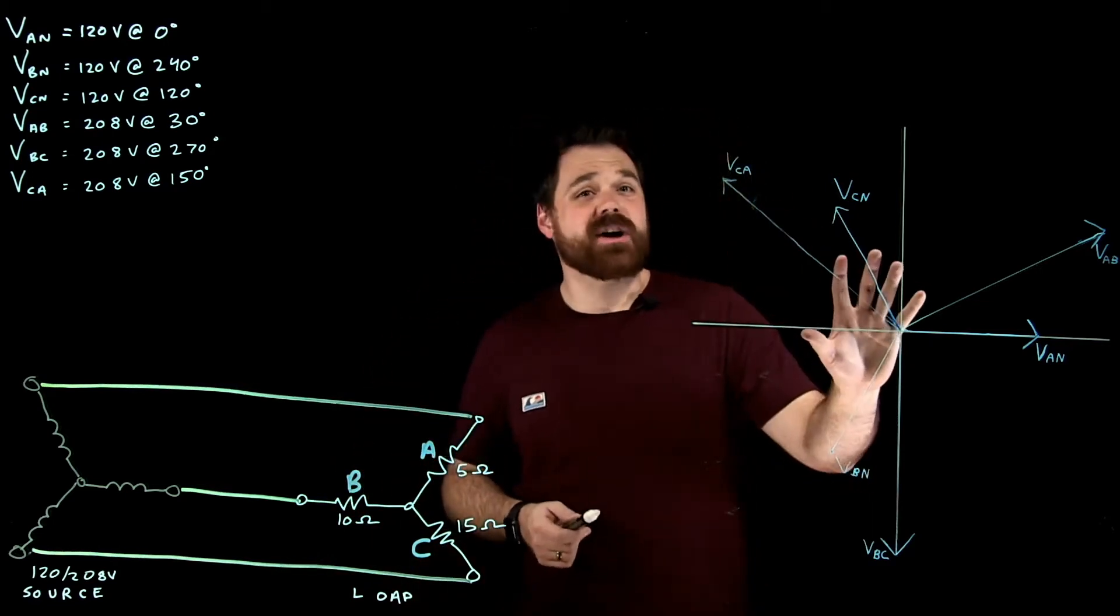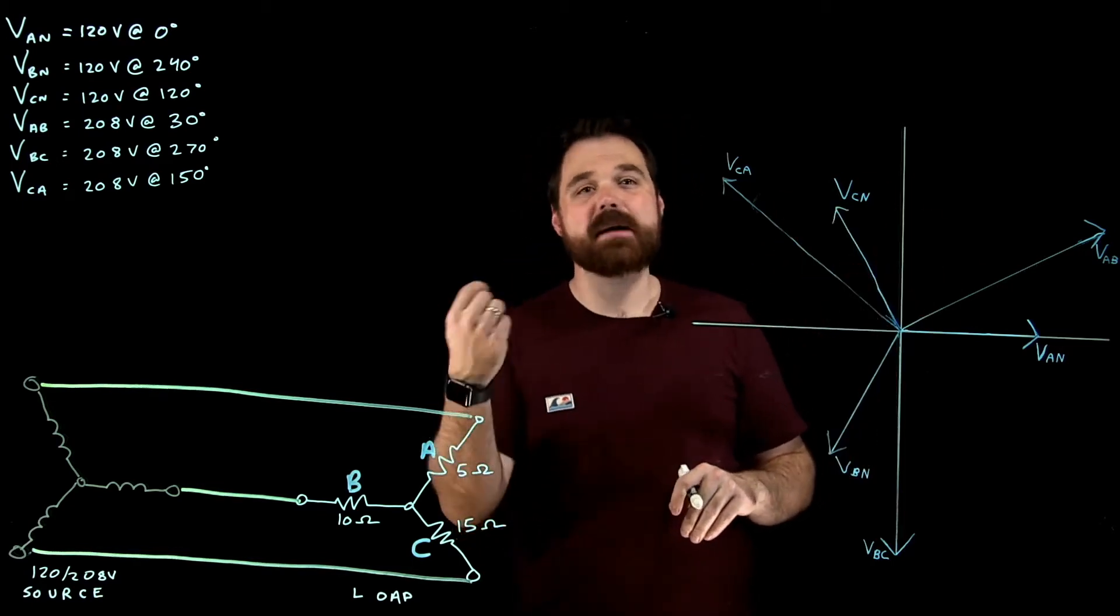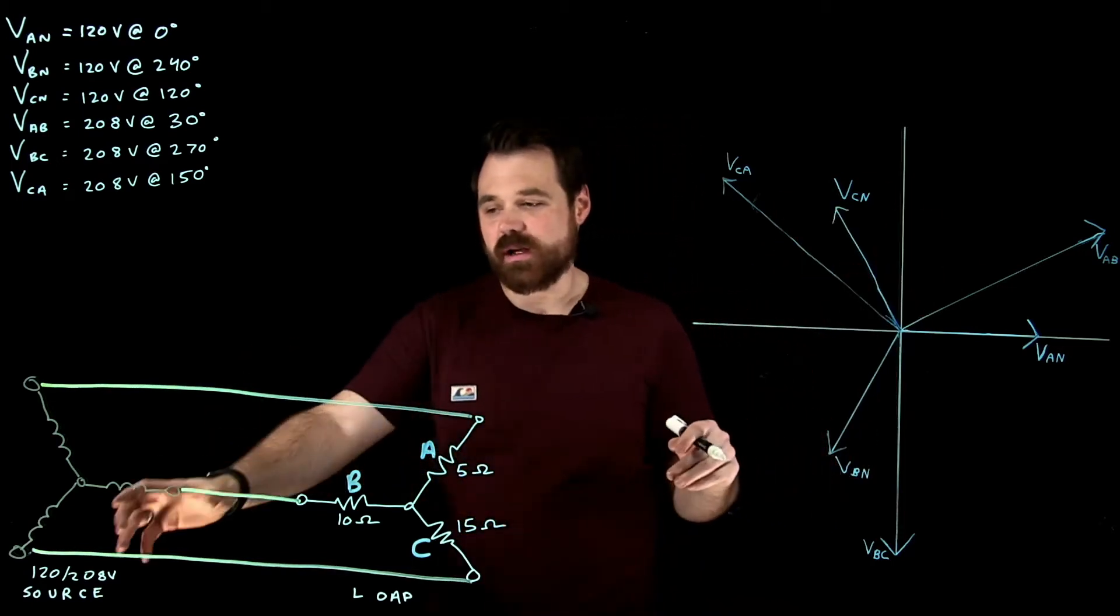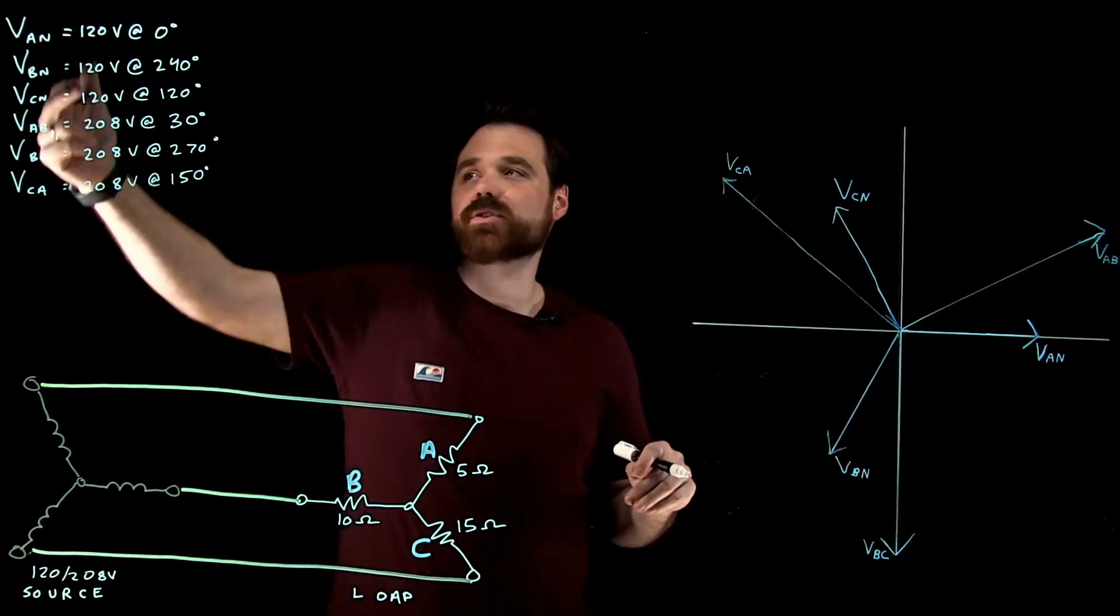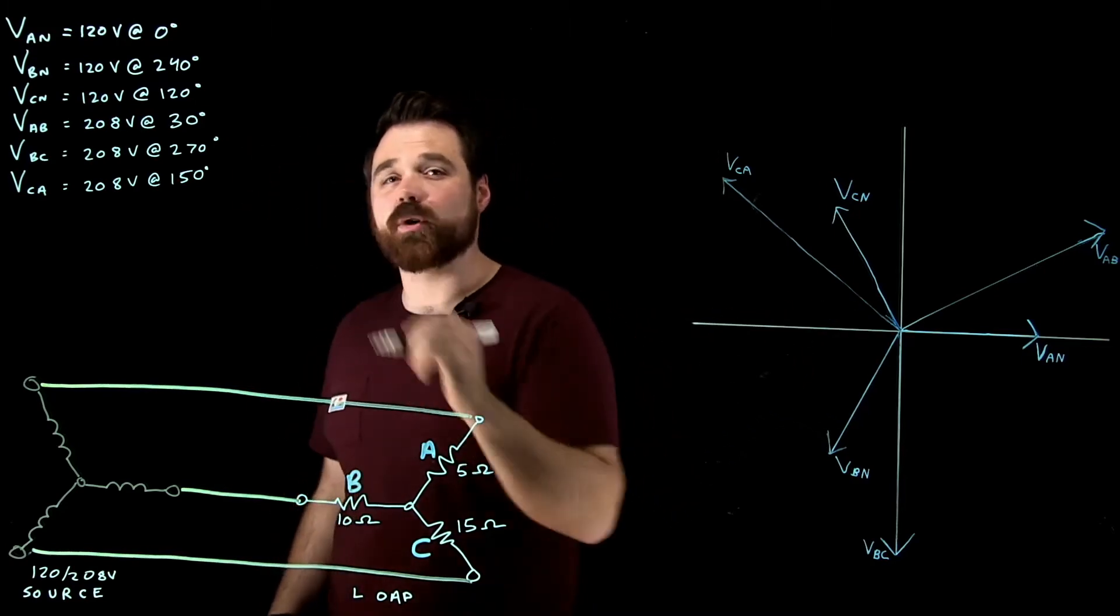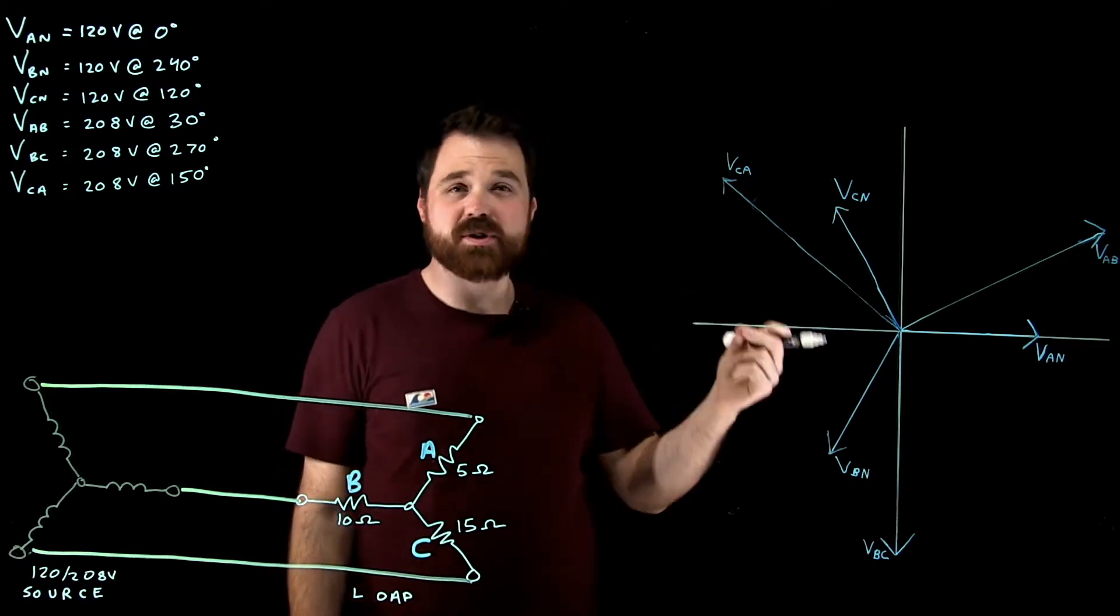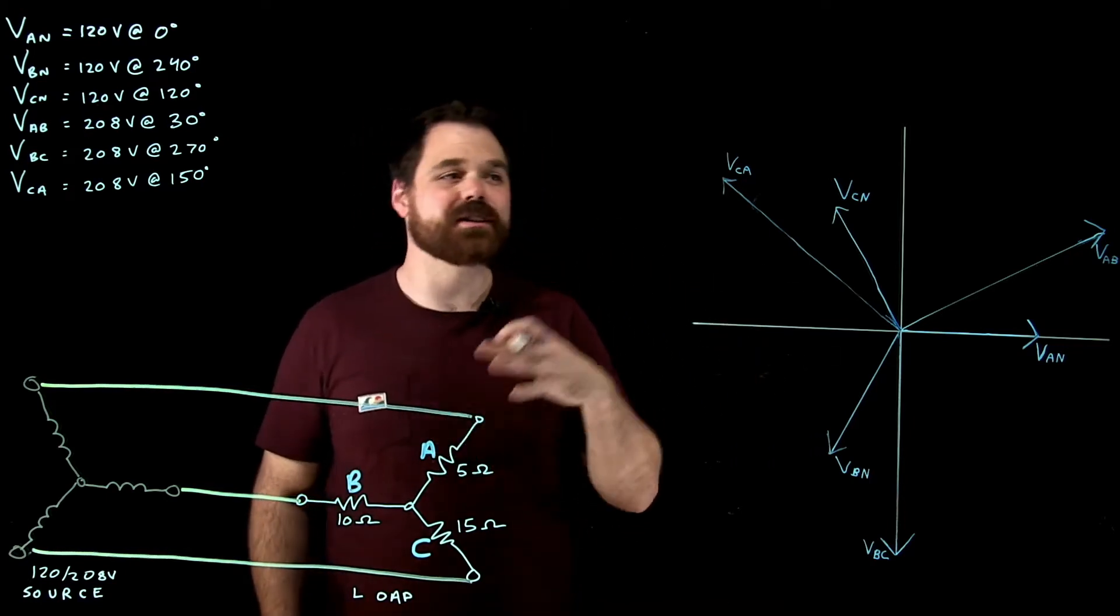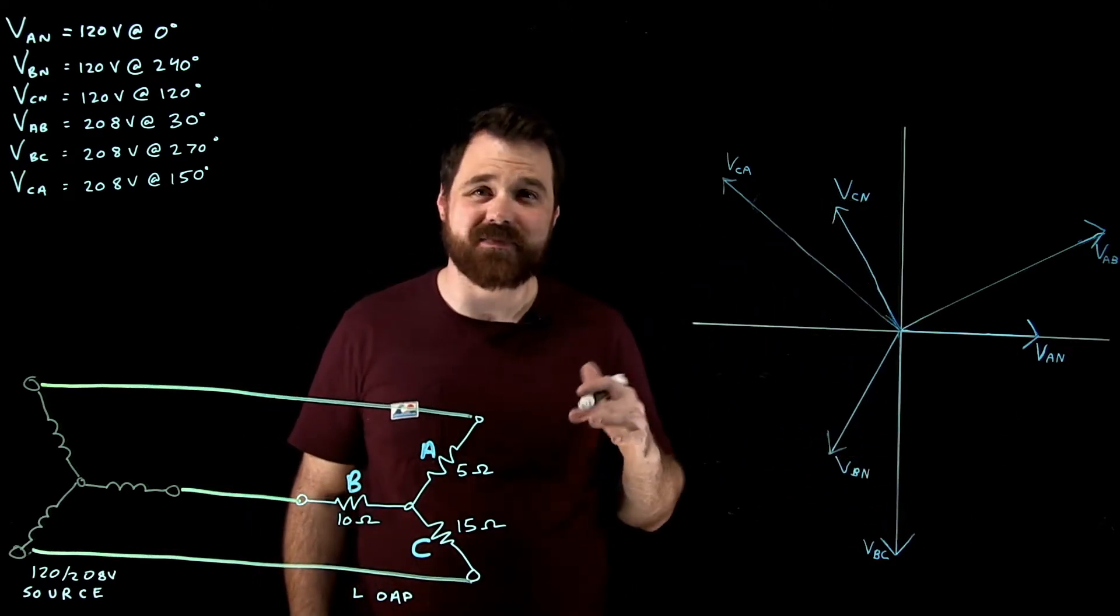And I've got my phasor diagram. And I've already started the phasor diagram. I've plotted all my phase voltages and my line voltages. So I know I've given a 120, 208 volt source down here. That's my phase voltages, and they're 120 degrees apart. Then I've got my line voltages. And keeping in mind, line voltage equals phase voltage times square root of 3. And line voltage leads my phase voltage by 30 degrees. So that's how I plotted all of these phasors.